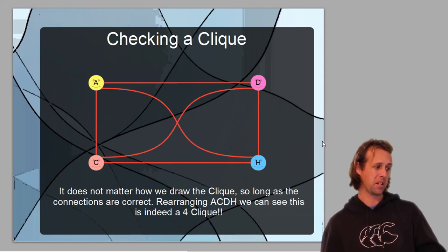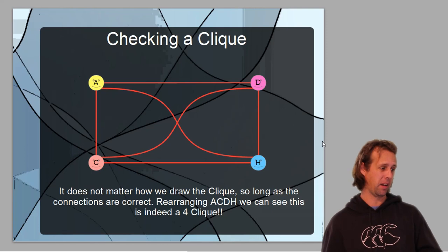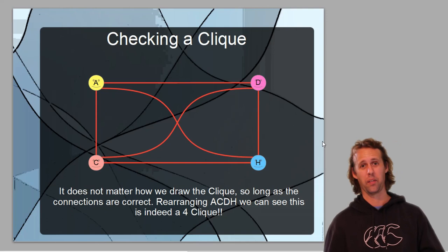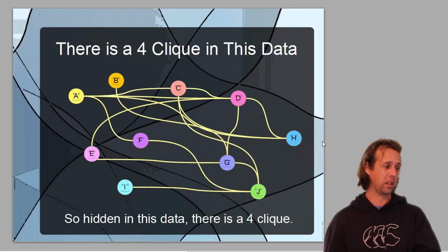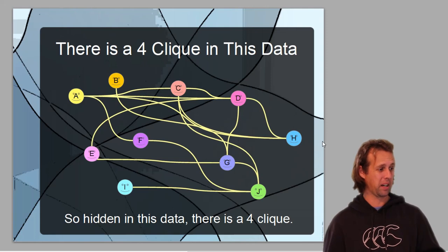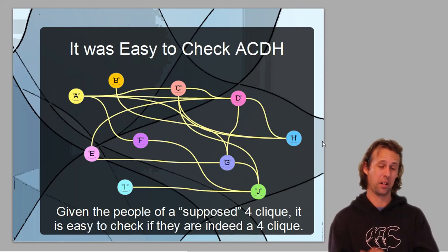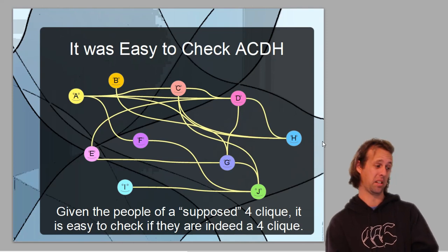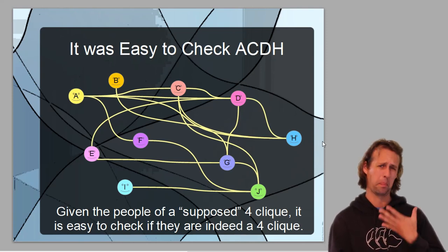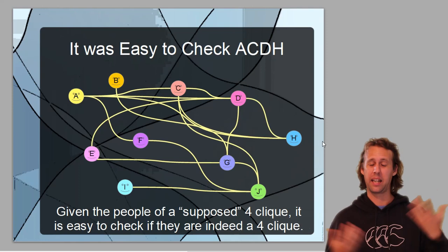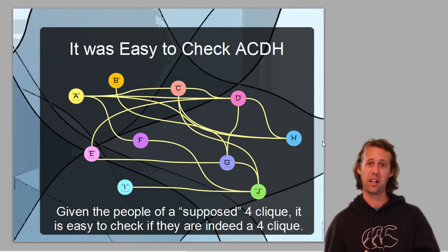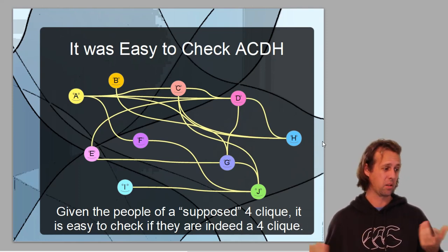If we rearrange A-C-D and H from the previous slide, then what we'll see is something like this. And it becomes fairly clear that all of these people are indeed friends with each other. So there is a four-clique hidden somewhere in this data. So we know what it is now, A-C-D-H, and it was easy enough to check when I suggested that A-C-D-H was indeed a four-clique. So given a supposed clique of four, we can easily tell if everybody's friends or not. You just have to check all of the connections one after another.